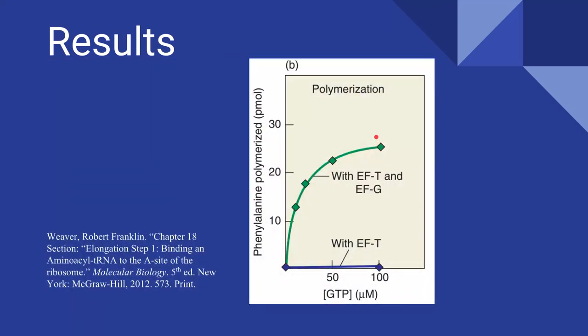For the results of the second experiment, Ravel reported the following. Alone, addition of EF-T did not increase the ribosome's ability to produce polyphenylalanine, as demonstrated by the blue line here. Even with increasing amounts of GTP, there were no significant changes to polypeptide formation. As such, something else must be needed.